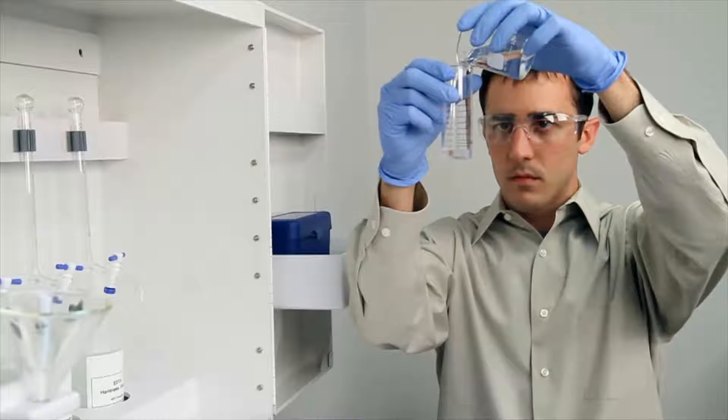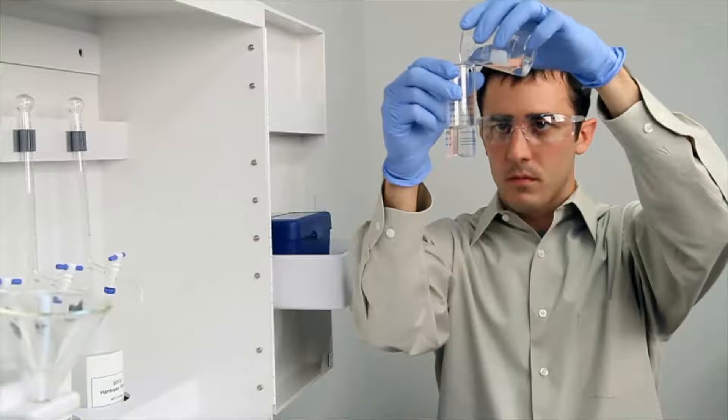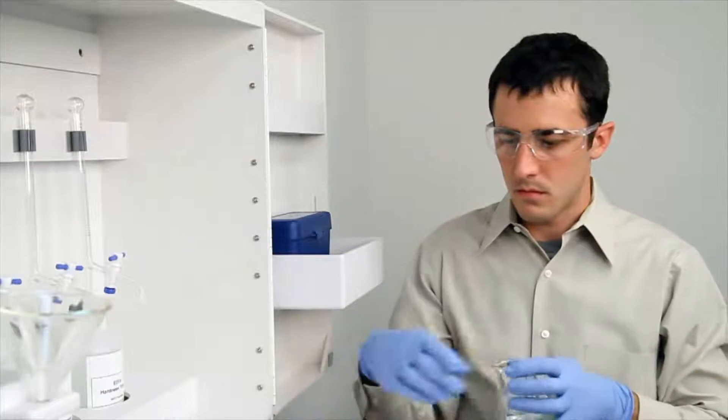To get an accurate sample size, you want to hold the vial close to eye level. Once you feel you have an accurate sample, place the vial on a level surface and bend down to eye level.